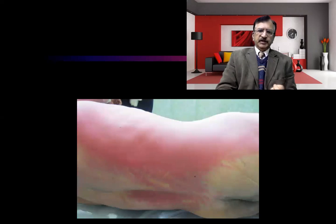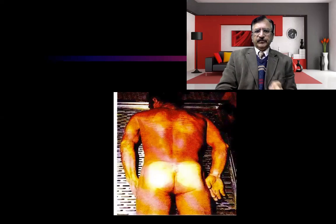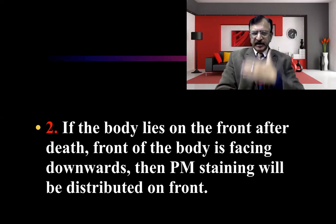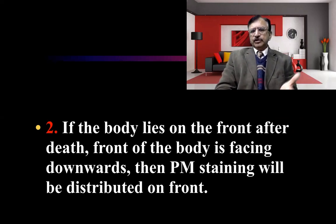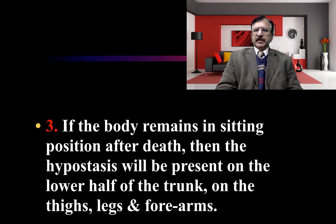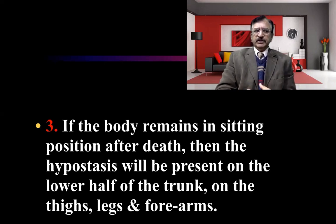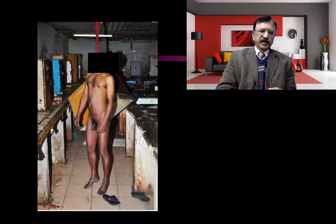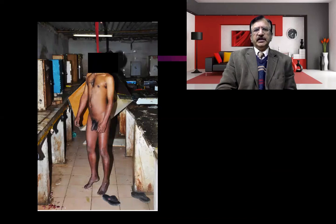If the body lies prone after death — front facing downward — then post-mortem staining will be distributed on the front. If the body remains in a sitting position, hypostasis will be present on the lower half of the trunk, thighs, legs, and forearms, which are dependent in that position. If the body remains suspended after hanging, hypostasis will be confined to the lower abdomen, thighs, external genitalia, legs, and hands.